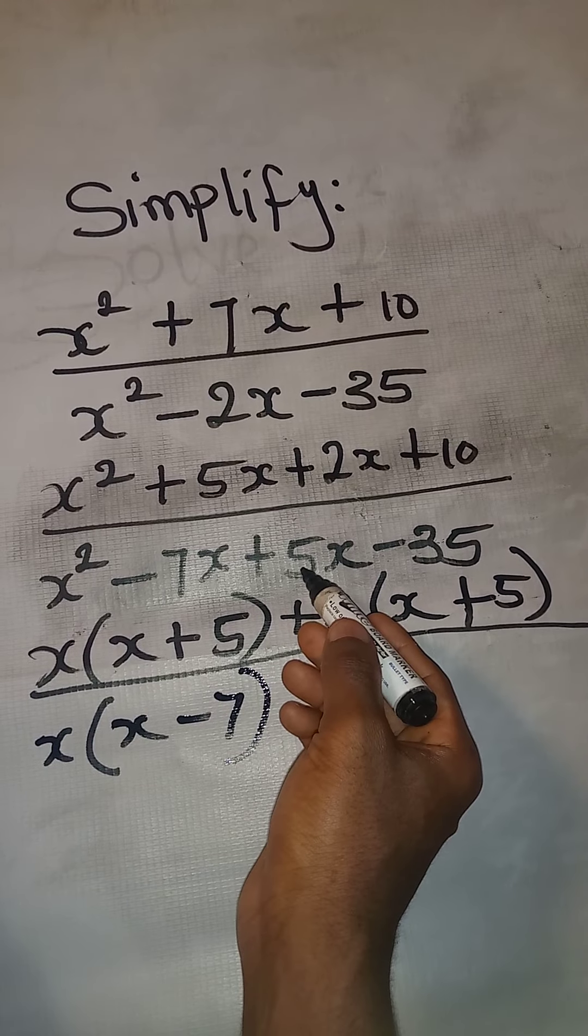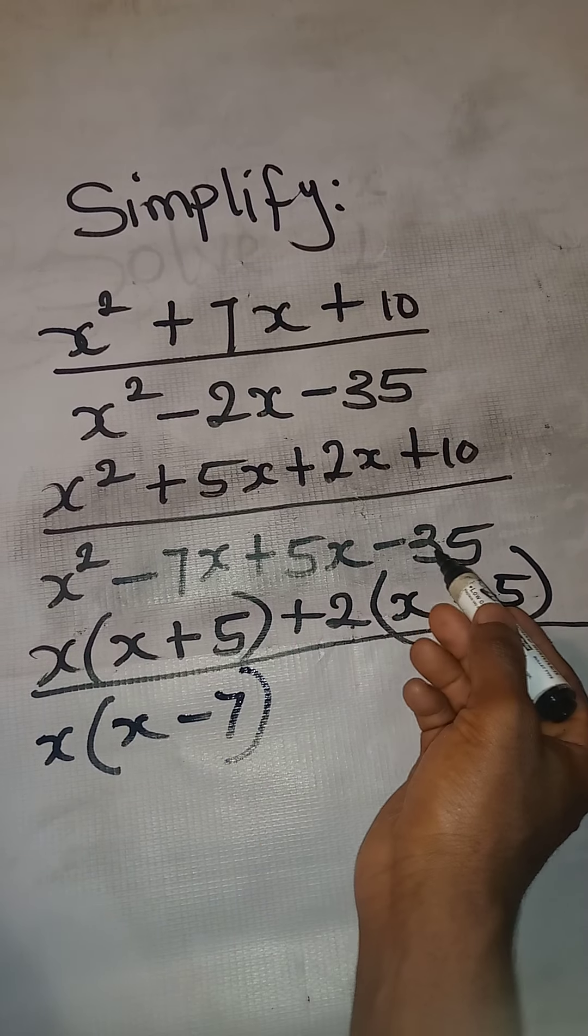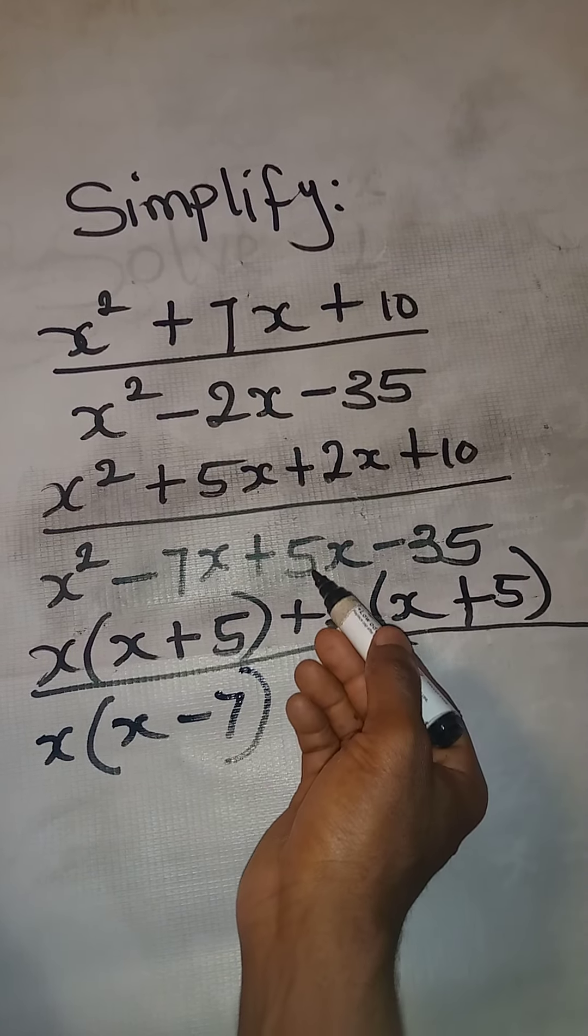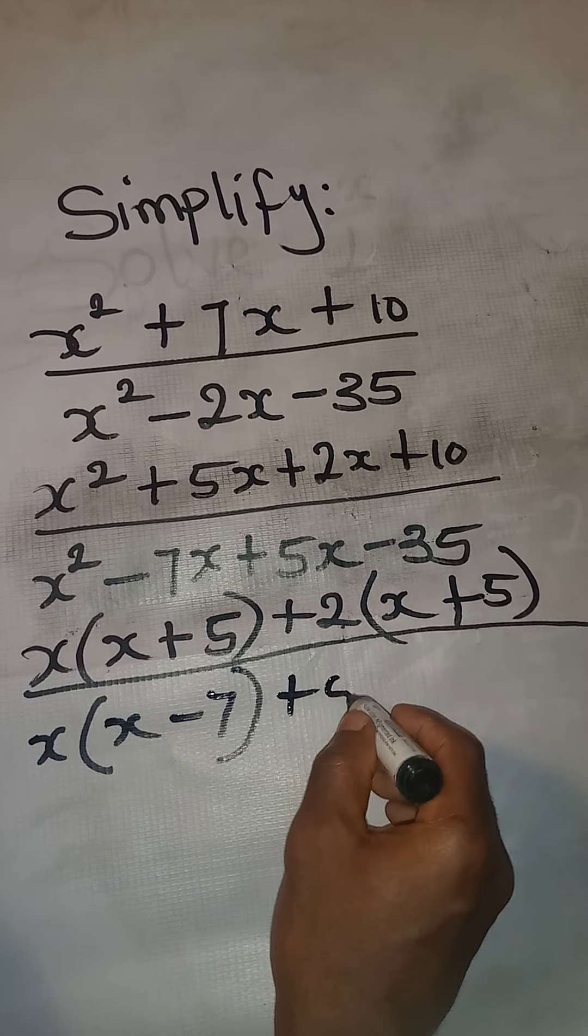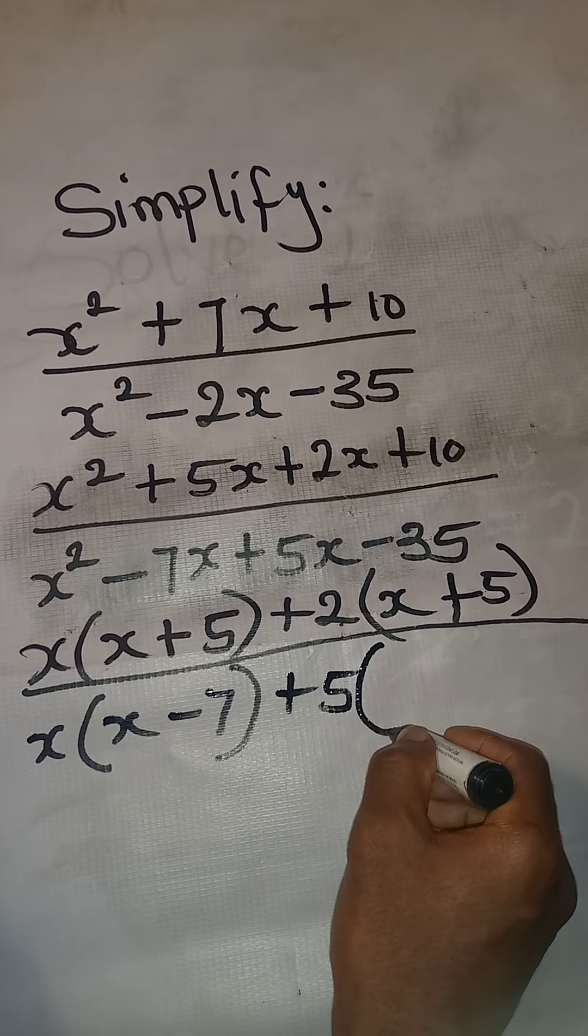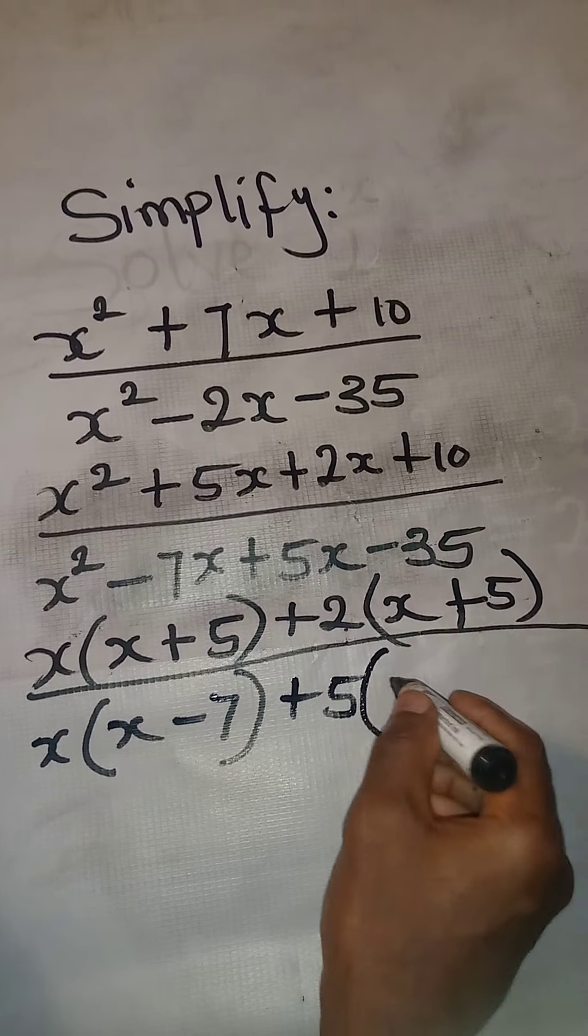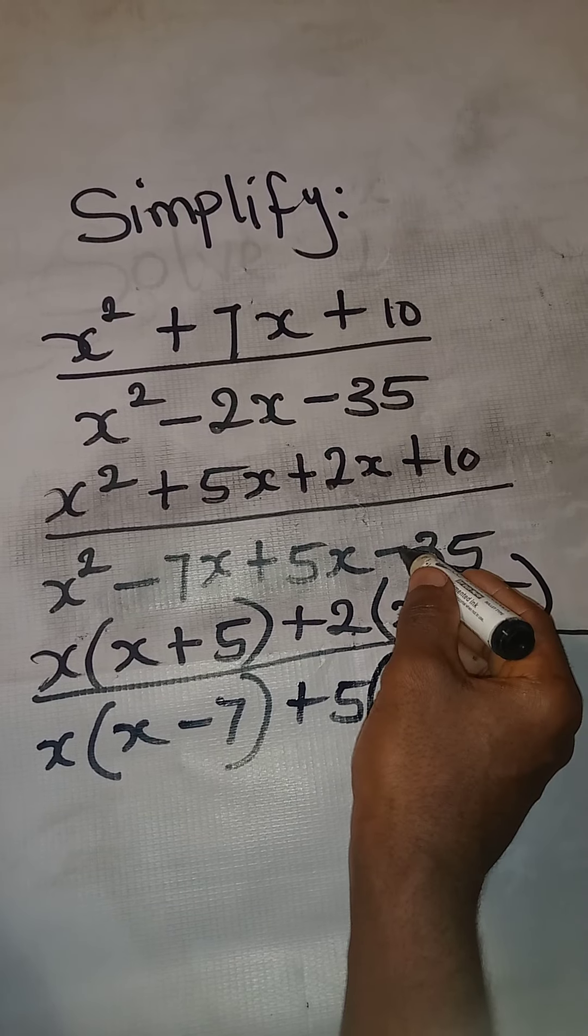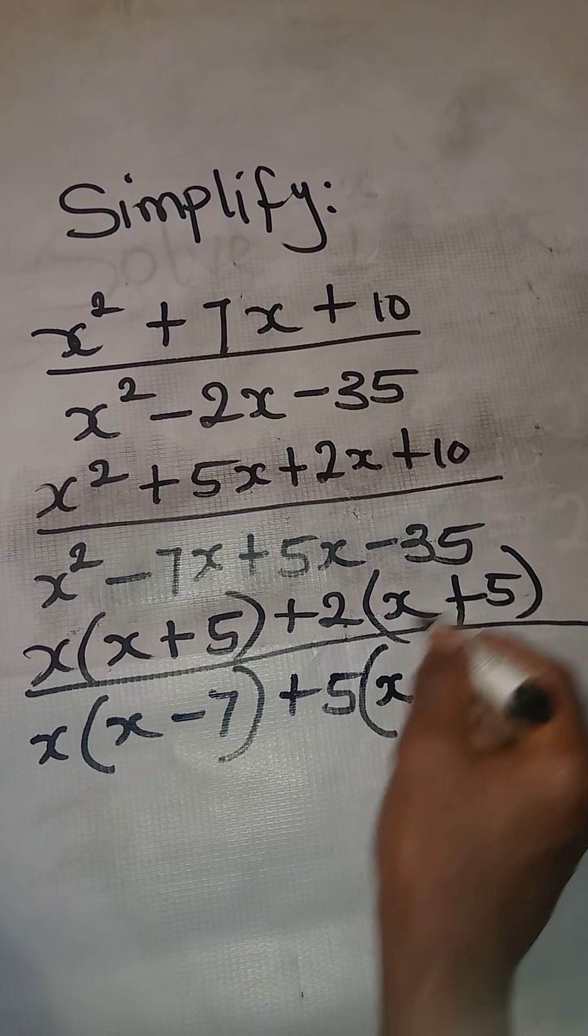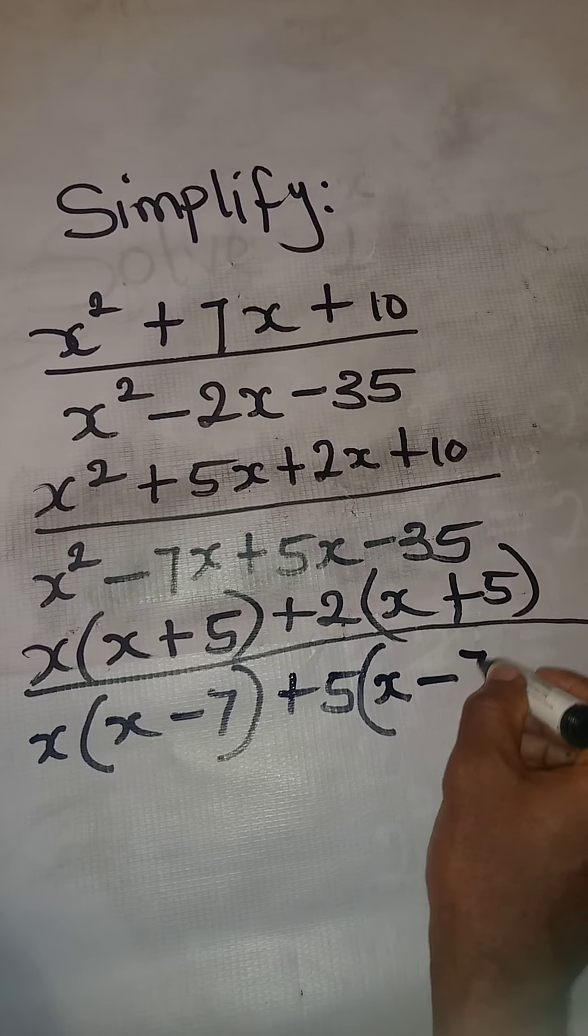Then here, 5x and then minus 35. 5 will be a factor that can go into the two of them. So I'll have positive 5 into brackets. 5 out of 5x will have x. Then there is negative there. It comes.